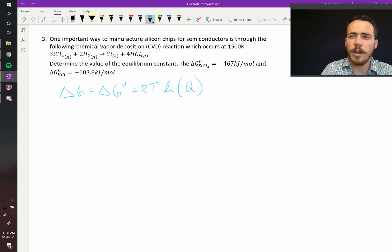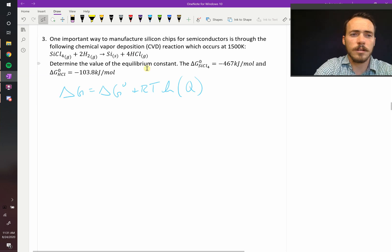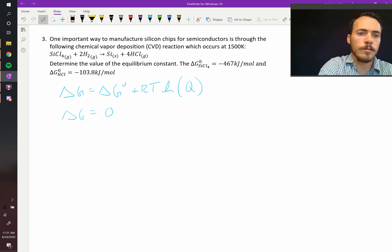And we know that at equilibrium, since we're determining the equilibrium constant, we know that delta G, this whole thing, equals zero. Therefore, delta G naught must equal negative RT natural log of Q.